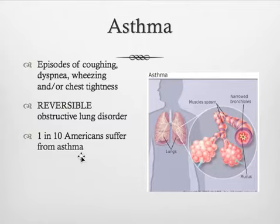Asthma causes wheezing, dyspnea, coughing, and chest tightness. But unlike COPD, which is not reversible, asthma is totally reversible. You take your rescue inhaler, it delivers albuterol — a stimulant — into your bronchi, and it causes those bronchi to open up and relax. It is completely reversible.